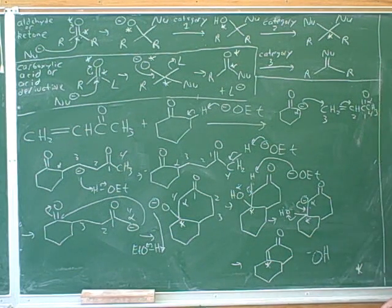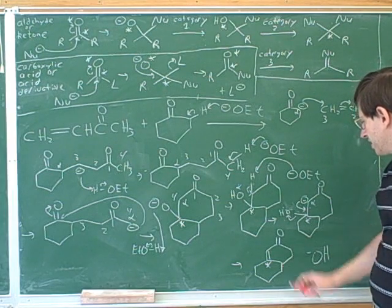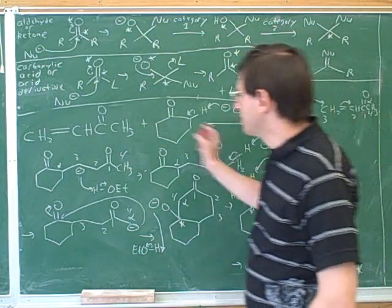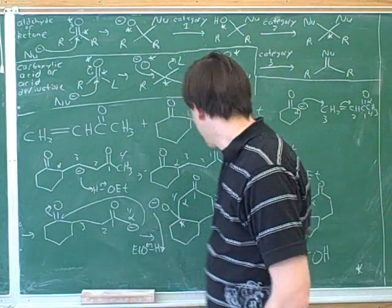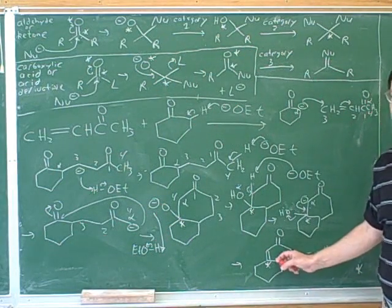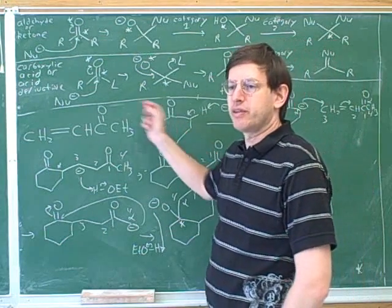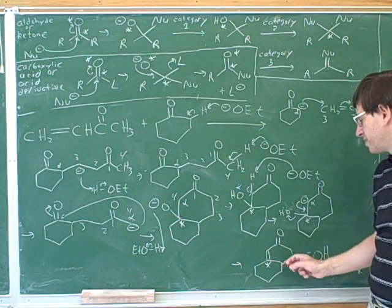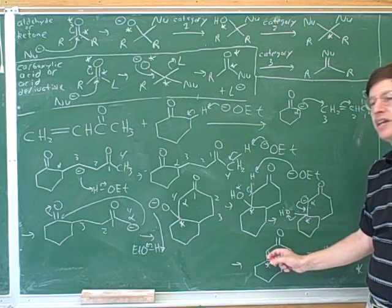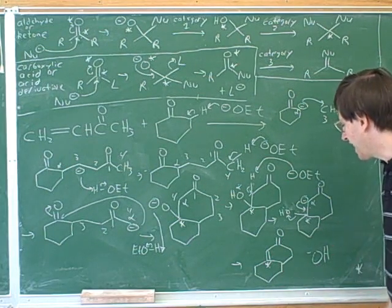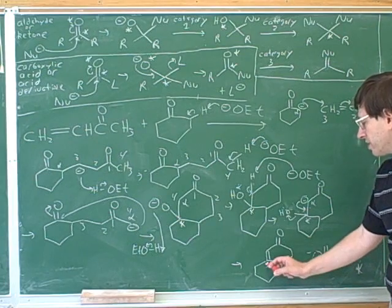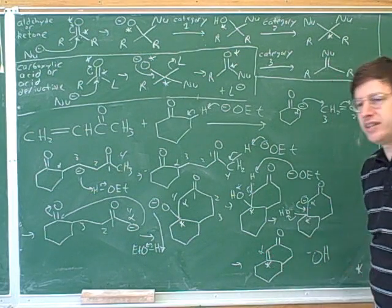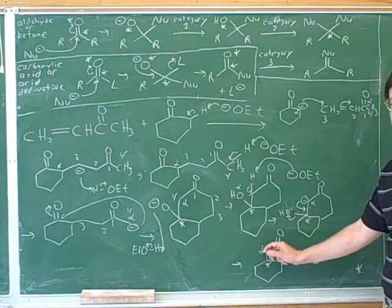All right. So that gives us this Robinson annulation here. So we managed to get all the steps here on the board. And again, at some point it might be really useful to number every single carbon to make sure you're not adding or dropping carbons. Here we ended up with two rings. Since we already started with a ring and the Robinson annulation made a new ring, notice that the new ring is what we said. It's a six-membered ring with a carbonyl and it's alpha beta unsaturated.